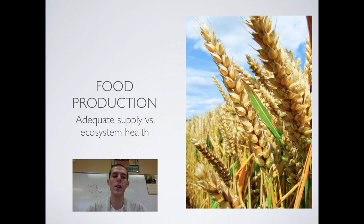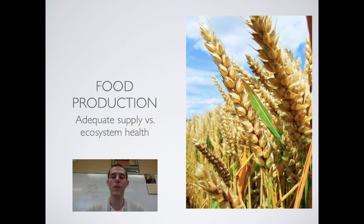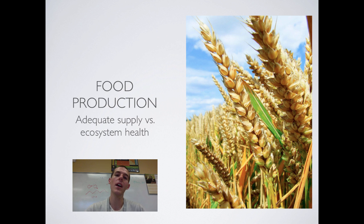Our third environmental indicator is food production. There is a tension between an adequate food supply for people and ecosystem health. Human population is growing, and a growing population is going to need more food. But raising more food can lead to habitat loss — people cutting down forests and grasslands to plant crops — and more intensive farming leads to soil degradation. Producing food for people is a great thing, but producing more food degrades the environment. Generally, the amount of food an area can produce is an indicator of environmental health — healthy environments produce more food, while less healthy environments cannot produce as much.